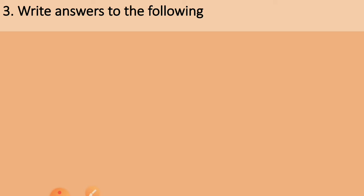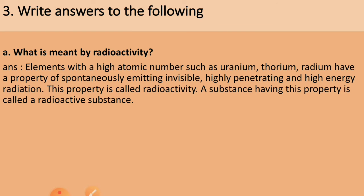Third question: write answers to the following. A: What is meant by radioactivity? Answer: Elements with a high atomic number such as uranium, thorium, and radium have a property of spontaneously emitting invisible, highly penetrating and high energy radiation. This property is called radioactivity and a substance having this property is called a radioactive substance.